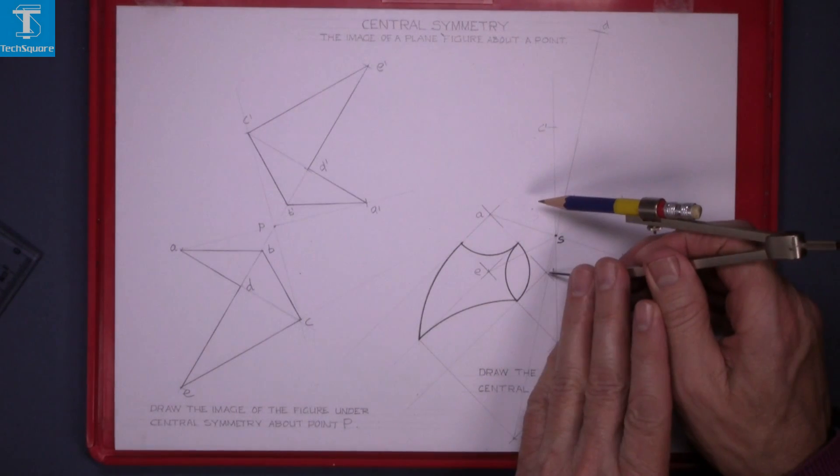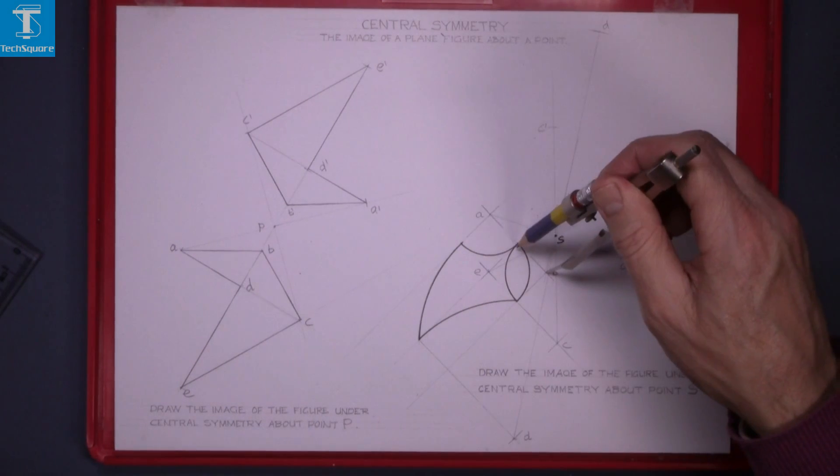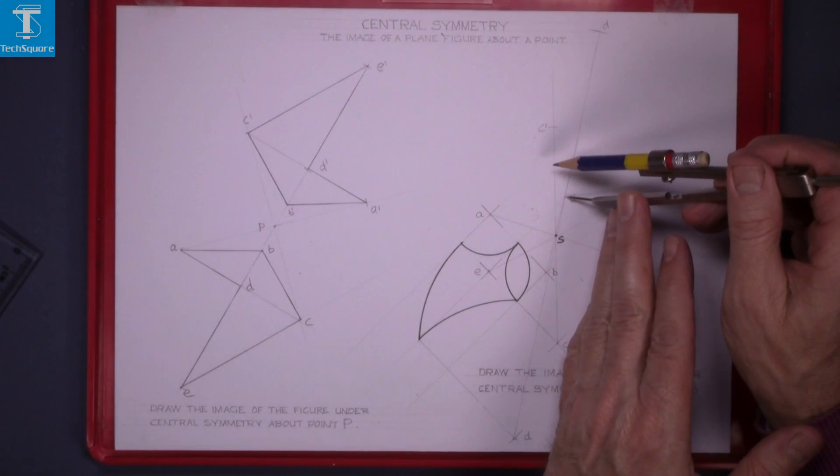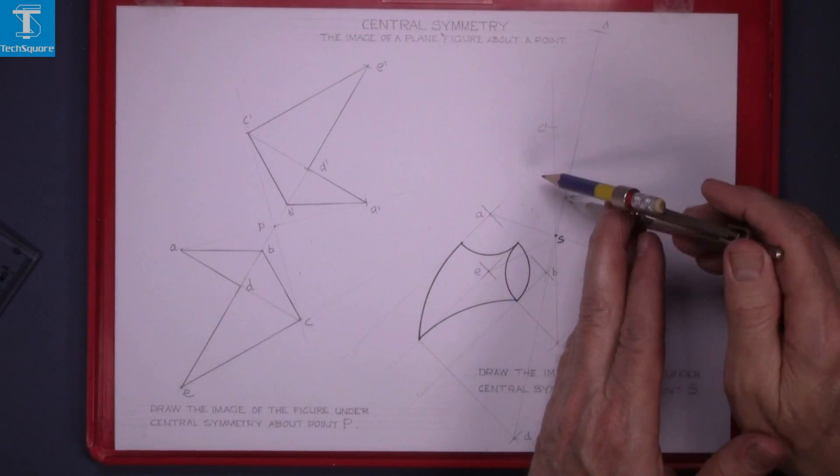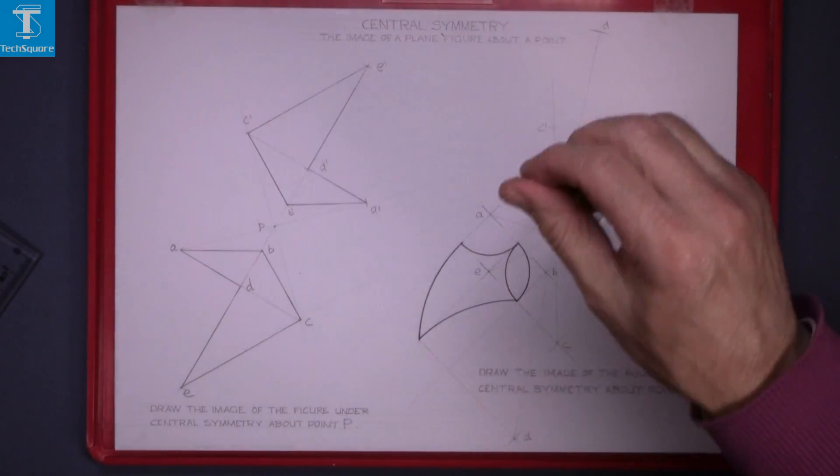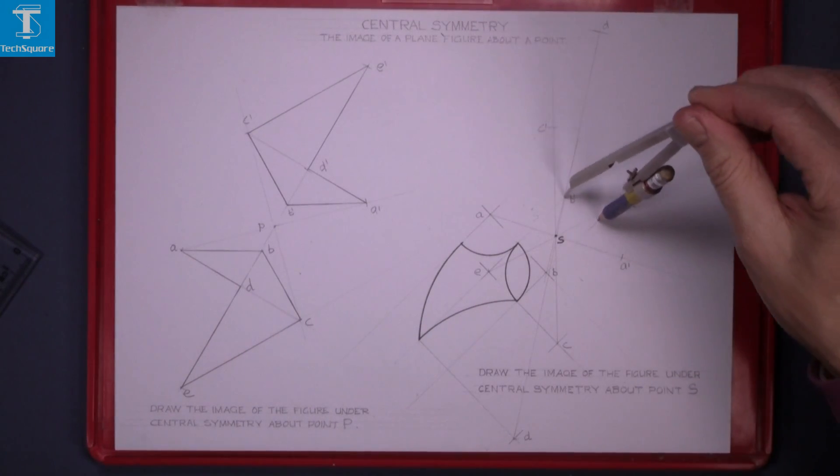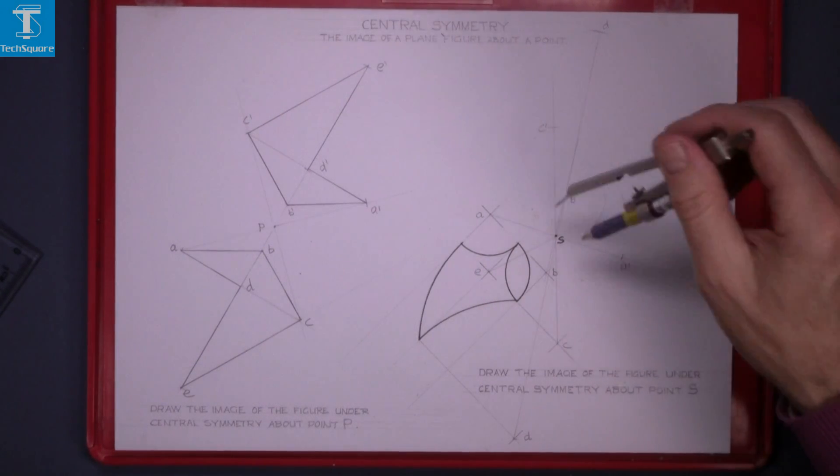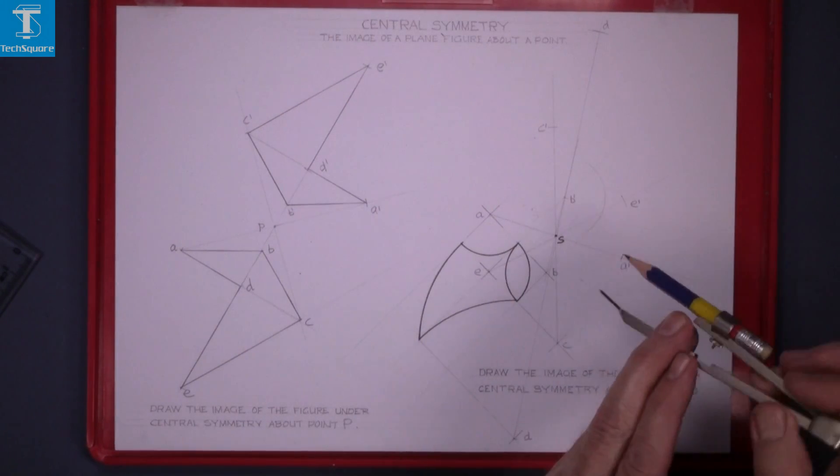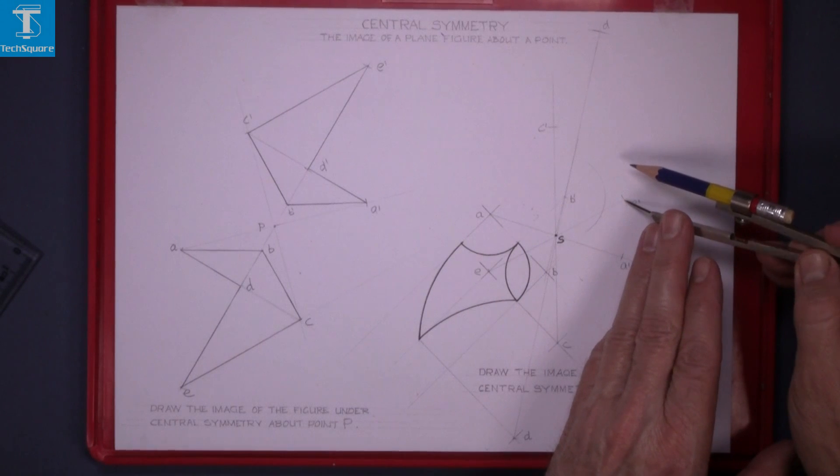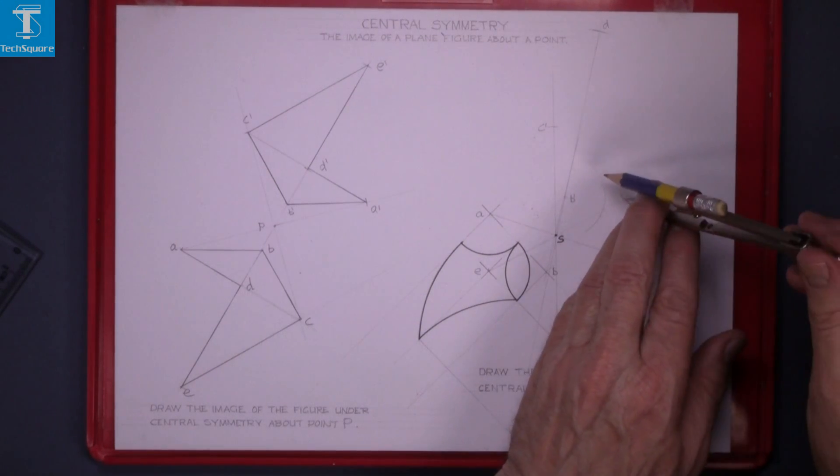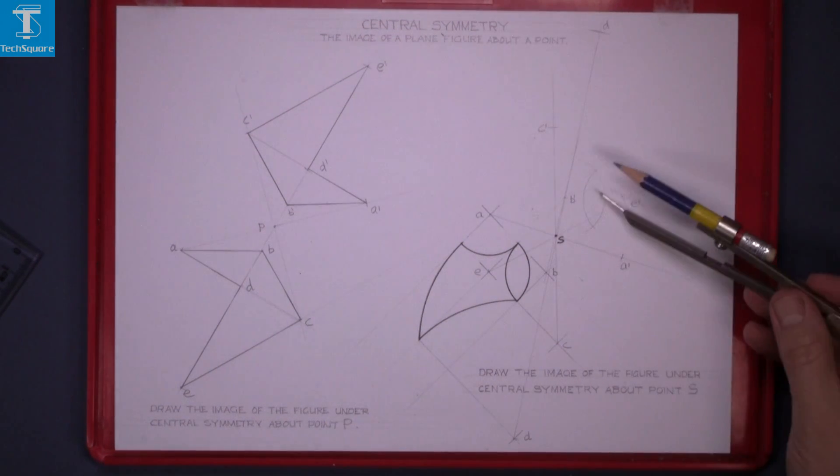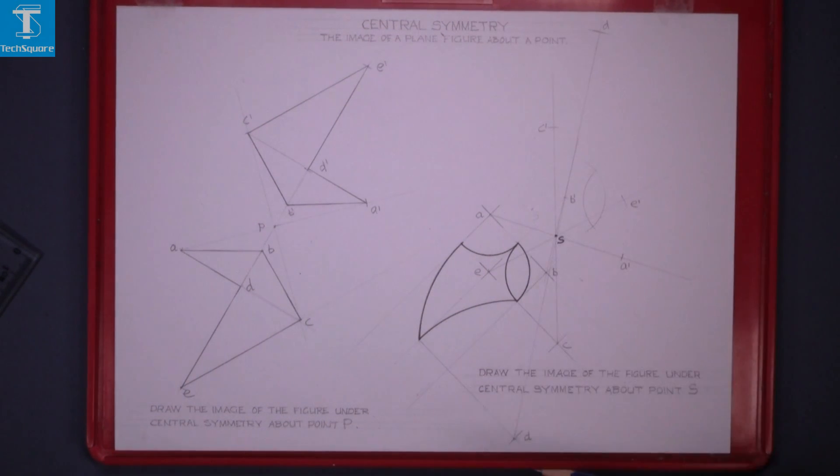Set the compass from B to the radius that we need, and then put it in the new B or B1 and mark it towards A. That's the first part of the new figure. And now set it in E, and with the same radius draw an arc. And that shape there is this one here.